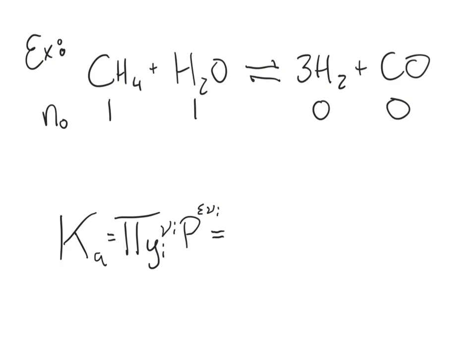Let's say we have our steam reformation of methane, making hydrogen and carbon monoxide. And we are initially going to charge the reactor with one mol, a one to one ratio of both of our reactants and none at all of our products.